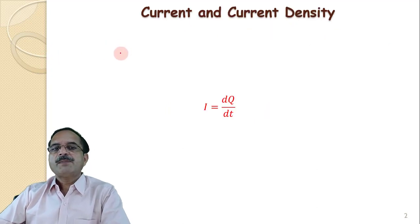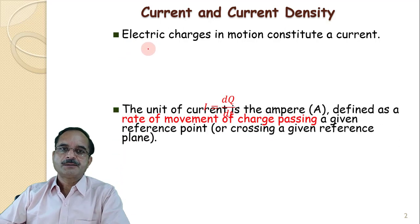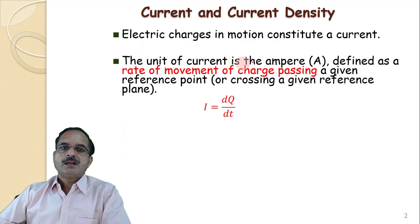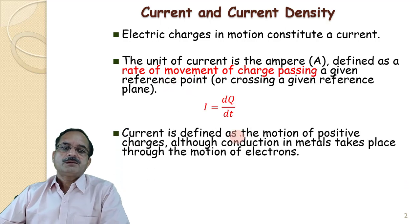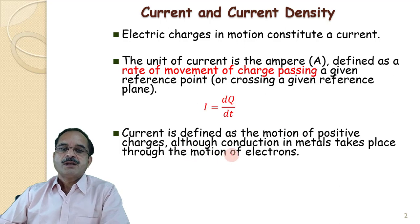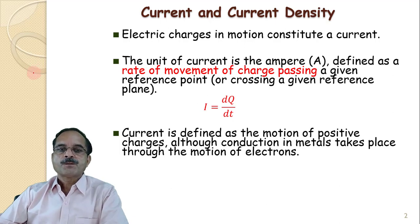The flow of current is defined as the rate of flow of charge. Electric charges in motion constitute a current, and the unit of current is amperes, defined as the rate of movement of charges passing through a reference point. Current is defined as the motion of positive charges, although conduction in metals takes place through the motion of electrons. The conventional direction of current is taken as opposite, corresponding to positive charges.